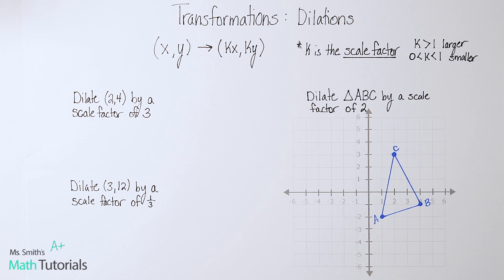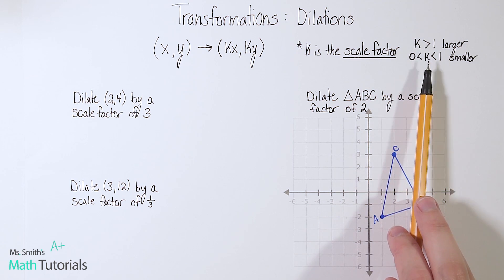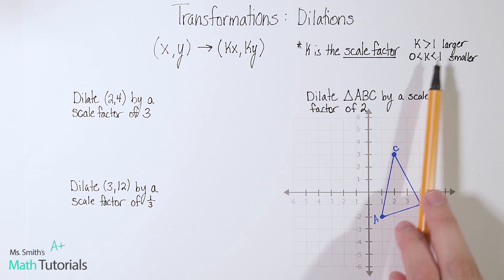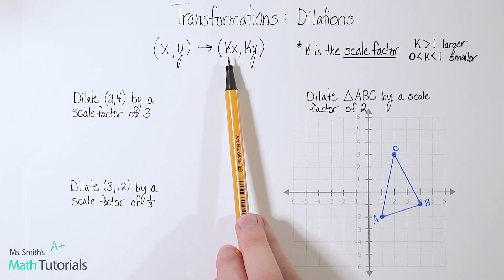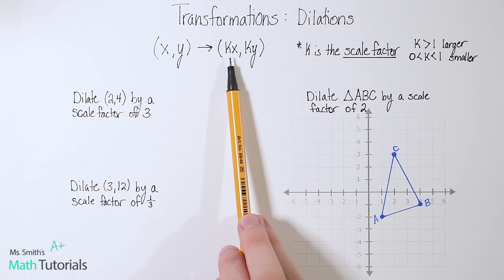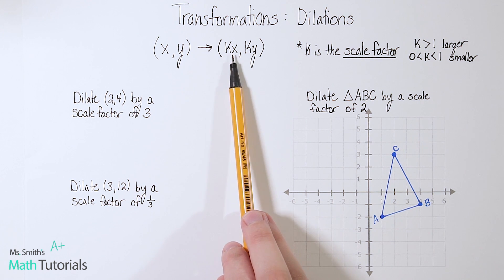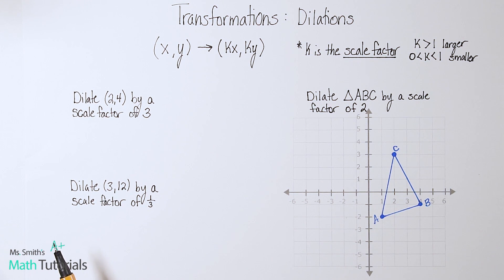So you'll be able to, once you get the hang of it, really quickly identify just by looking at it if something's going to get larger or smaller based on the scale factor. So coming back to the rule, we're going to take that scale factor, which they'll give us in whatever problem they're asking you, and you're just going to multiply it by your x value and multiply it by your y value.